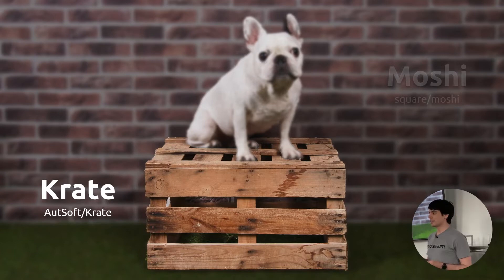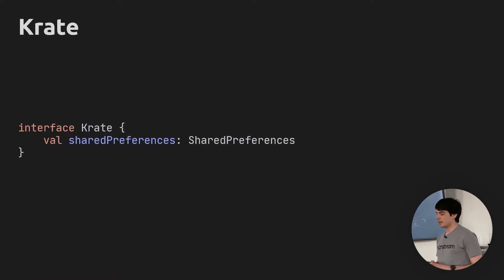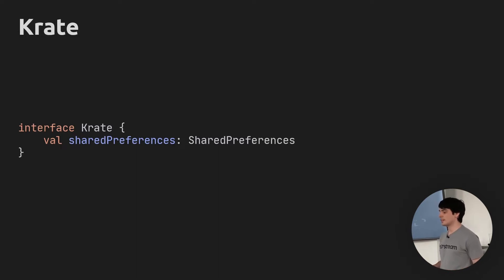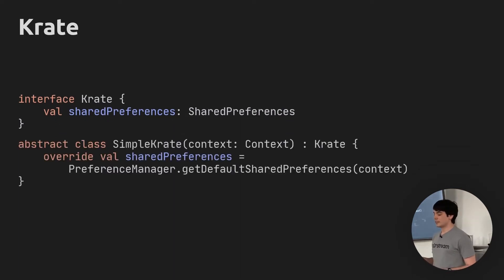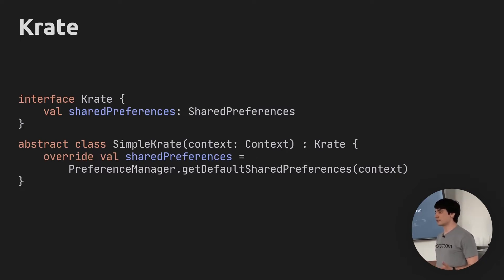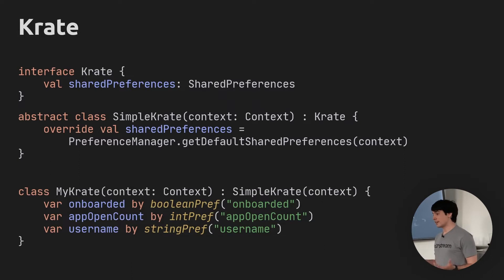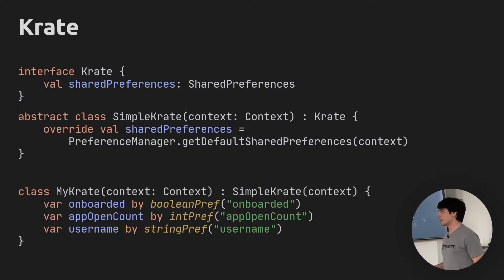Crate is an Android library that makes it easy to store values in shared preferences. Let's look at what it looks like on the code level. Crate is an interface, and it's a very simple interface — all it has is a shared preferences property inside it. The library also gives you a default implementation called SimpleCrate, which takes a context as its parameter and grabs the default shared preferences from that context. You would list different properties within your class and delegate each of them into functions provided by Crate.